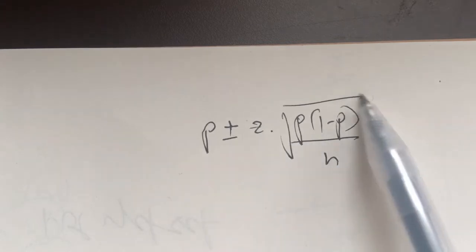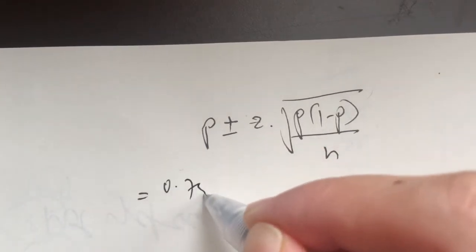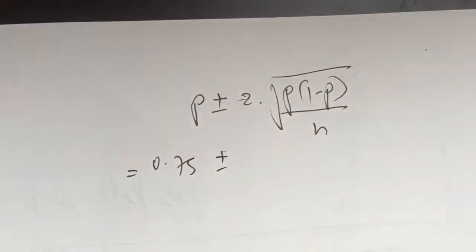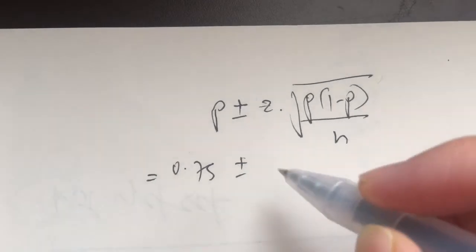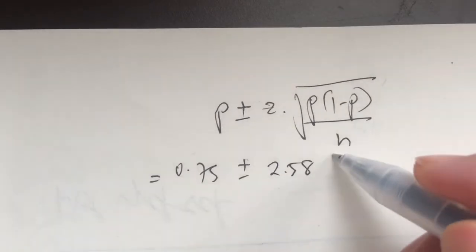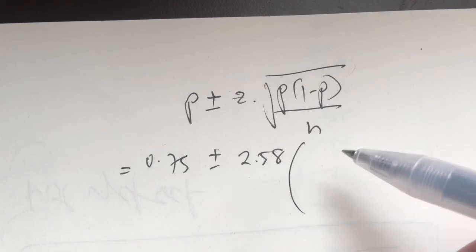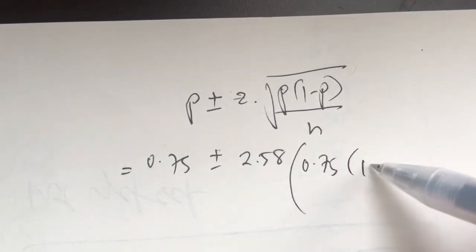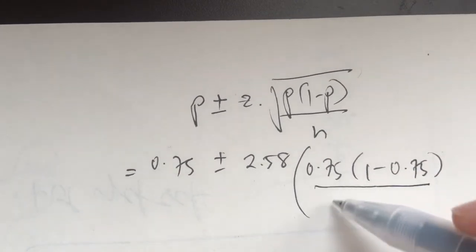From our question, p is 0.75, plus minus. Now look at your z-table — we're asked to find a 99% confidence interval. So 99% corresponds to a z-value of 2.58. Now we write down our standard error: p is 0.75 times 1 minus p, or 1 minus 0.75, over our sample size of 400. We square root all of it. Why don't you pause the video and try to work this out.